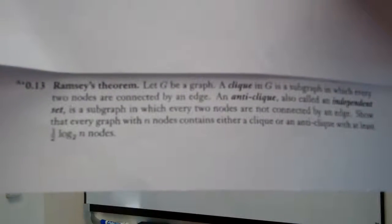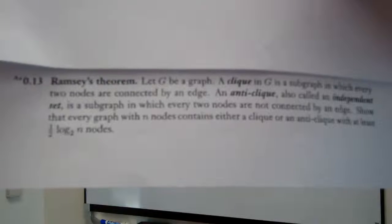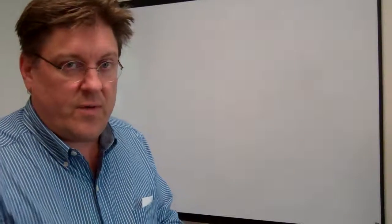The purpose of this video is to discuss problem number 13 out of the Sipser Textbook on Theory of Computation — that's problem 0.13 out of chapter 0. Basically what we've got to do is show that there has to be a clique or an anti-clique in any given graph of at least one half log base 2 of n, if the graph has n vertices.